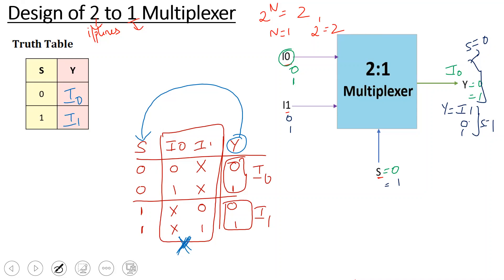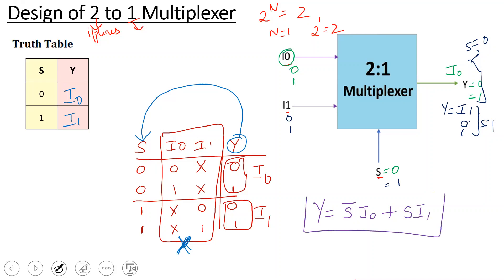From the truth table, the Boolean expression is: when S=0, Y equals I0; when S=1, Y equals I1. This gives us the Boolean expression Y equals S-bar times I0, plus S times I1.